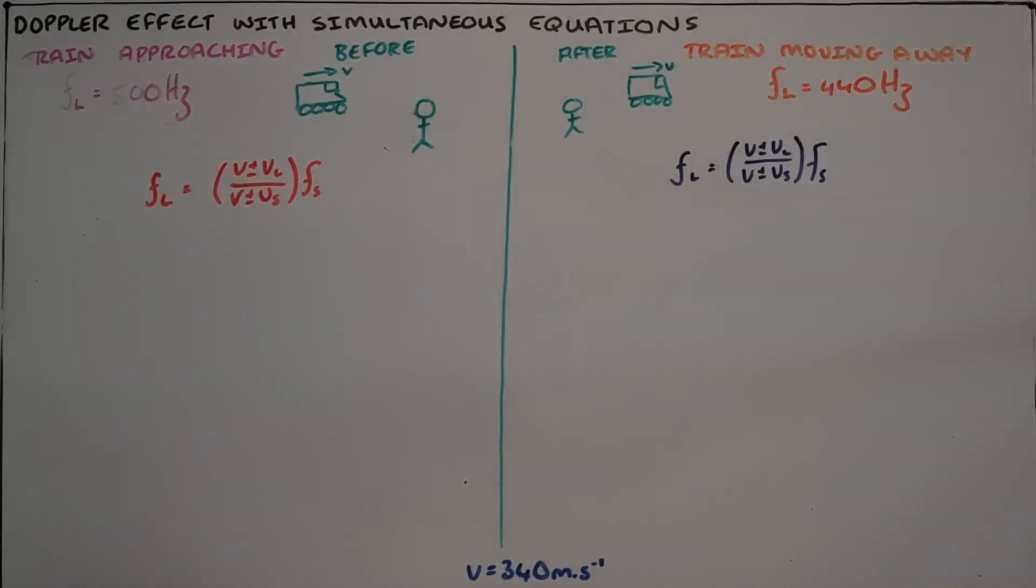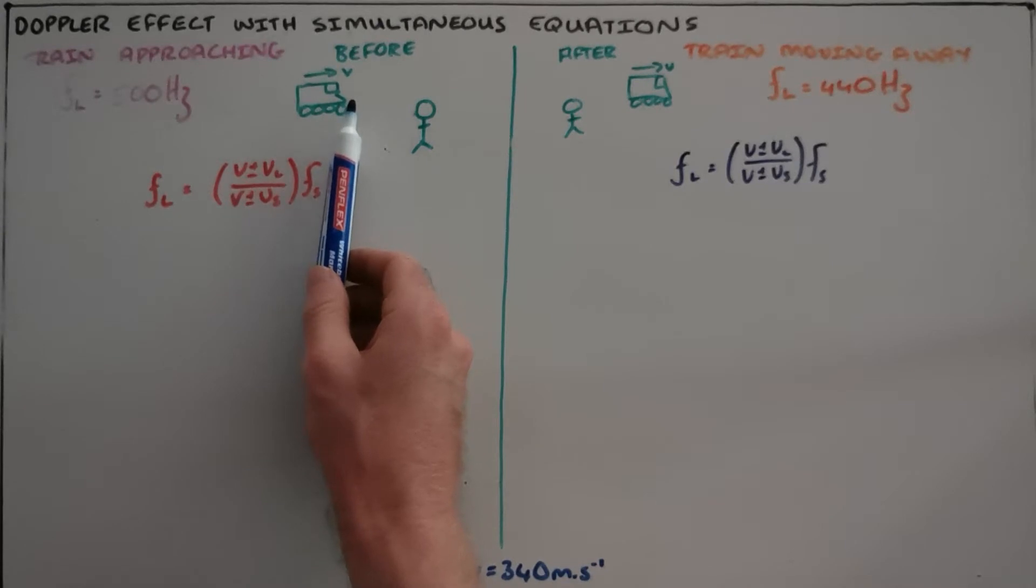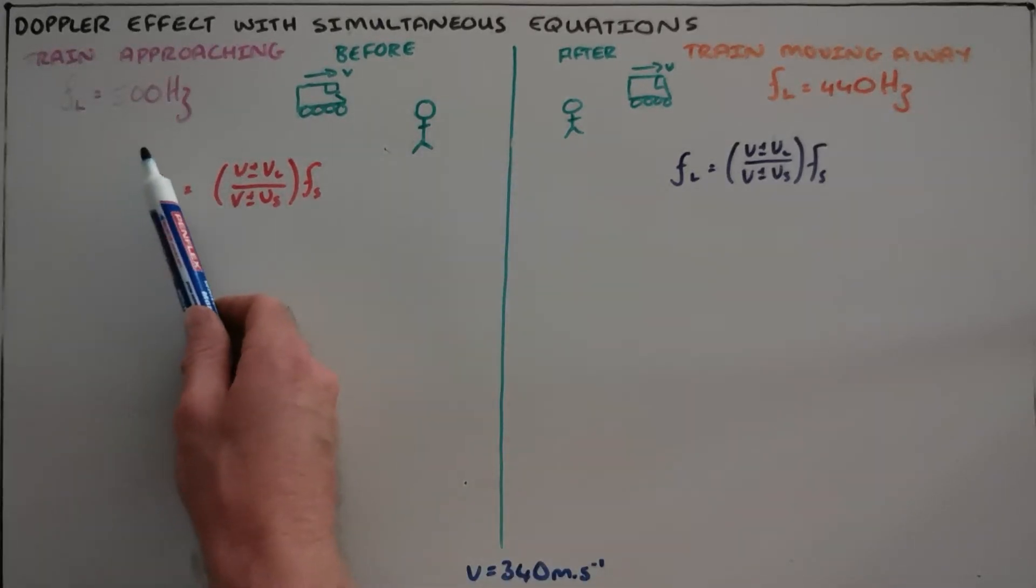The Doppler effect can often be tested with a simultaneous equation where the question would read something like this: we are told that a train is approaching a stationary observer at a set speed V and the observer observes a frequency of 500 Hertz.